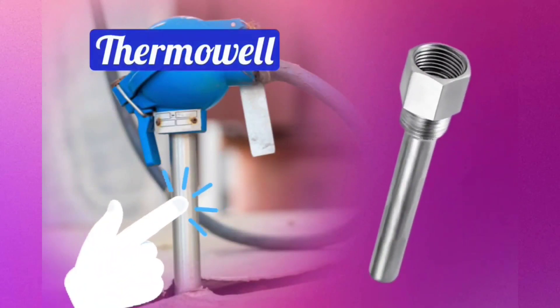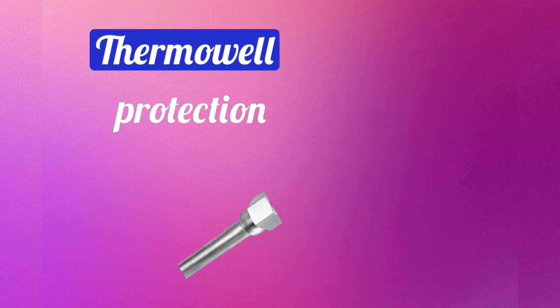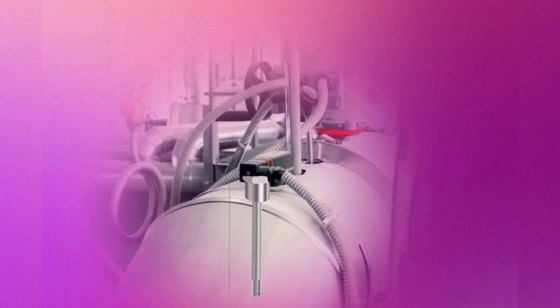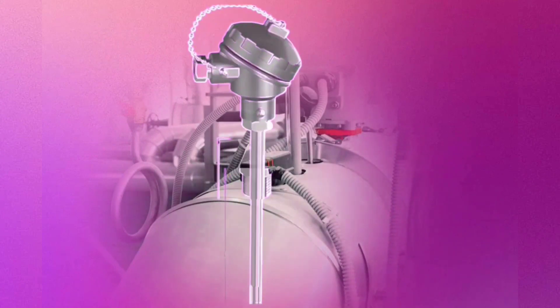Before installing RTD, a thermo well is also installed. Thermo well provides protection to RTD, and we can check it anytime by easily removing it from thermo well. First, thermo well is installed. Then, by using slide wrench, RTD is tightened in thermo well.